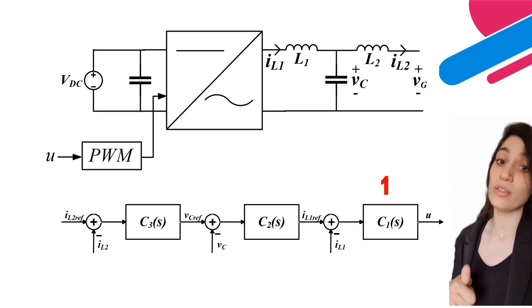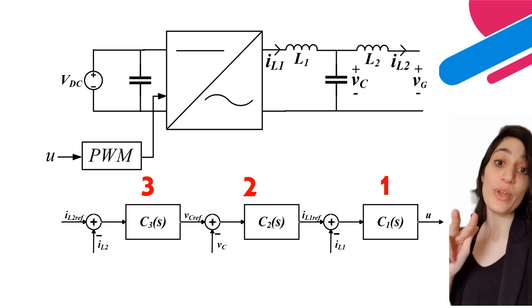So we have not one, not two, but three control loops.